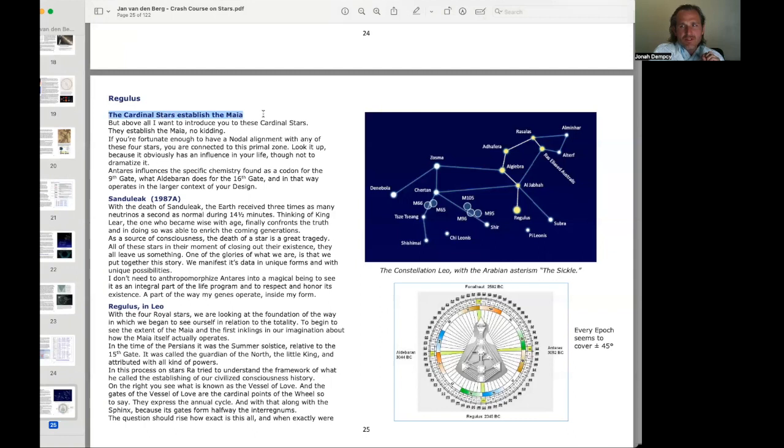Regulus, the cardinal stars established the Maya. Above all, I want to introduce you to these cardinal stars. They established the Maya, no kidding. If you're fortunate enough to have a nodal alignment with any of these four stars, you are connected to this primal zone. Look it up because it obviously has an influence in your life, though not to dramatize it. The cardinal stars are Fomalhaut, Aldebaran, Regulus, and Antares.